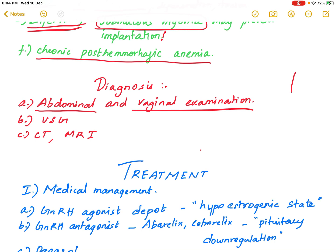On abdominal examination, a nodular tumor can be palpated protruding against the anterior abdominal wall. On vaginal examination, uterine enlargement and irregularities can be assessed. The most commonly used imaging modality is ultrasonography, which accurately assesses uterine dimensions, myoma location, and interval growth of fibroids.